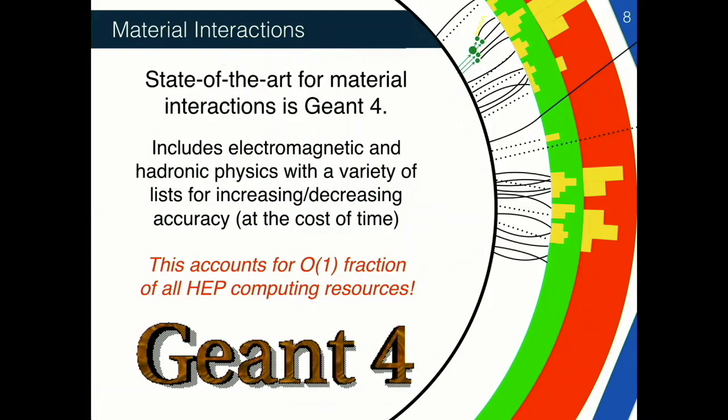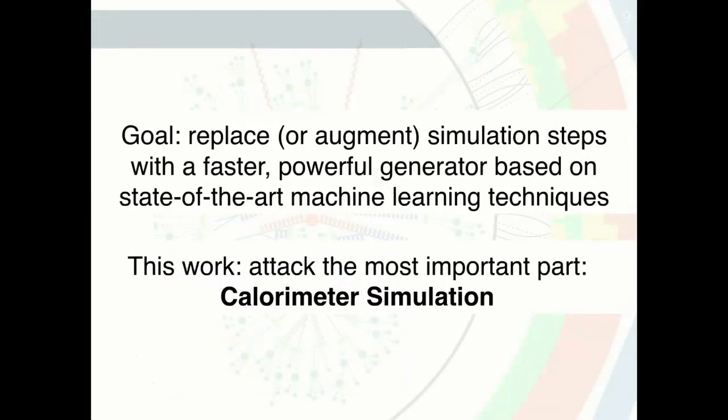It turns out that most of the simulation time is in one piece of software. There are actually many simulations stacked together to span all those orders of magnitude, but the one that takes the most time is when particles are produced, hit the detector material, and you have to transport them all the way down from their high energy to ionization energy where they stop. This is done with software called Geant4, which propagates particles through matter and takes something like an order-one fraction of all high-energy physics computing resources.